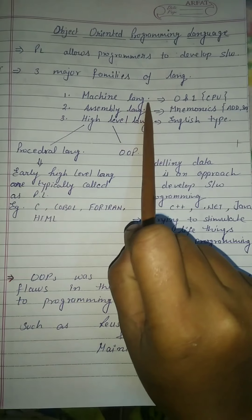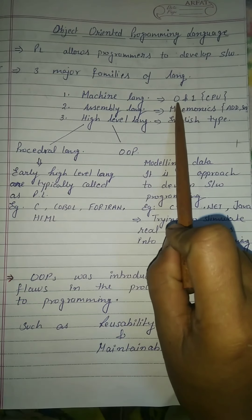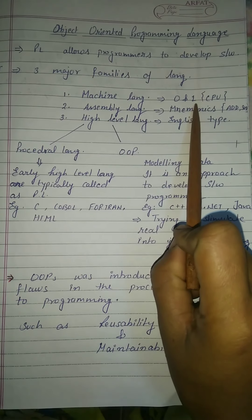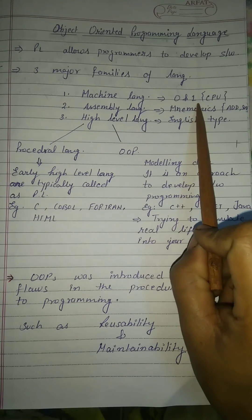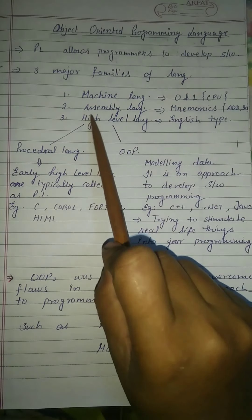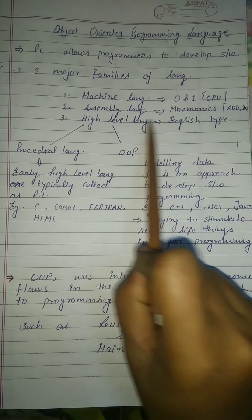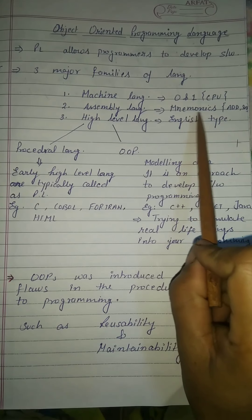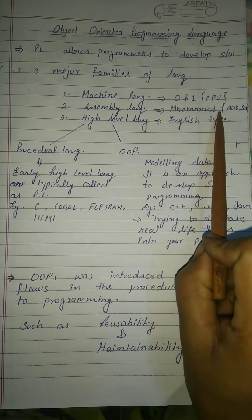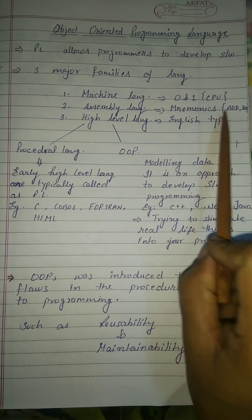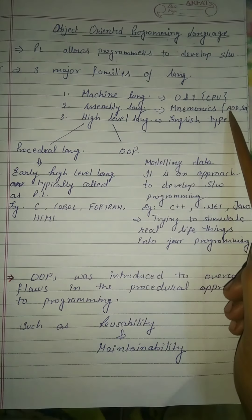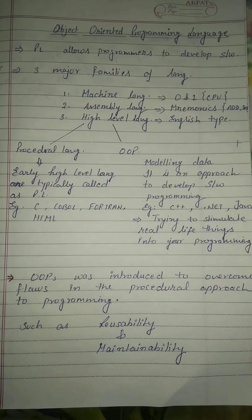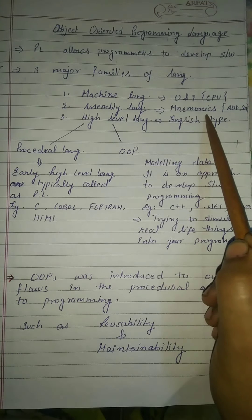Machine language is understood only as 0s and 1s — meaning the CPU can understand only 0s and 1s. In assembly language, mnemonics are used. It is the next stage of machine-level language, using commands like add, sum, and move — these are mnemonics.